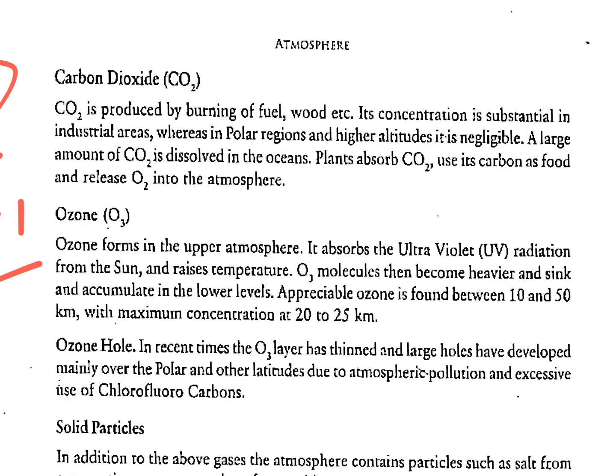Carbon dioxide is produced by burning fuel, wood, etc., and its concentration is substantial in industrial areas, while in polar regions or at higher altitudes it is negligible. A large amount of carbon dioxide is dissolved in oceans. Plants absorb carbon dioxide, use its carbon for food, and release O2 into the atmosphere.